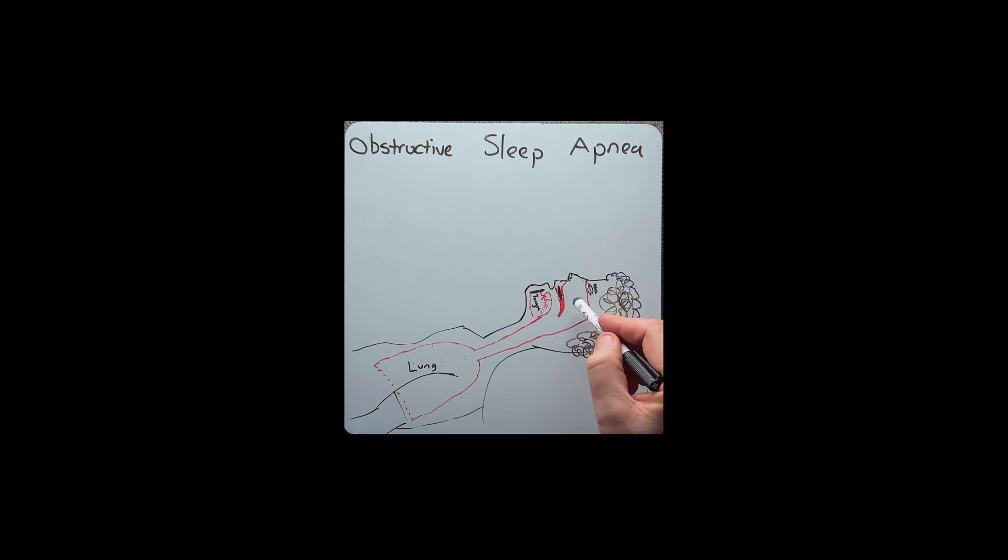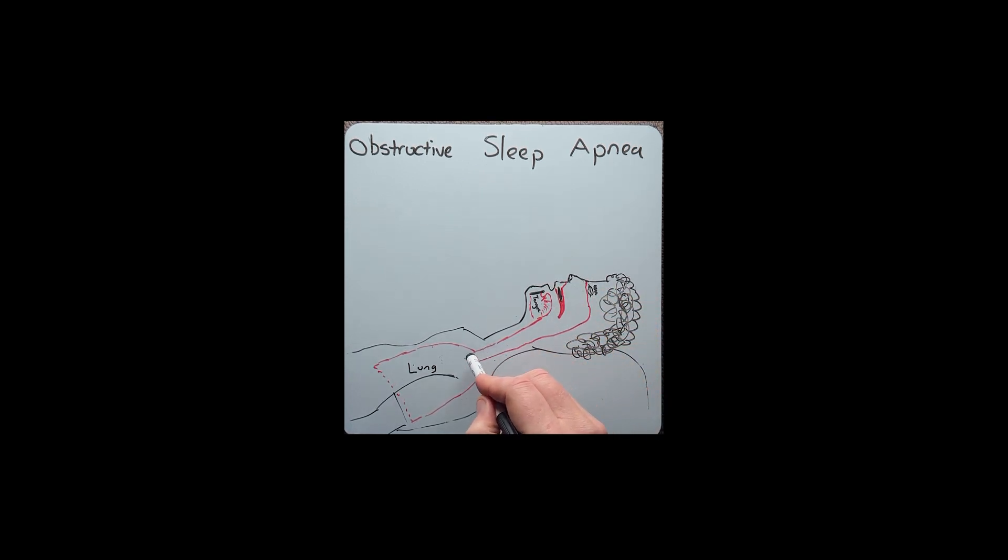Normally during sleep, air enters your nasal cavity and oral cavity, moves down into the pharynx, trachea, and then finally the lungs, where it oxygenates your blood.